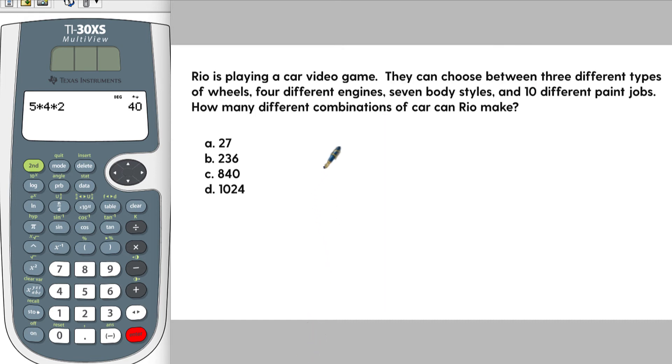Rio is playing a car video game. They can choose between three different types of wheels, four different engines, seven body types, and ten different paint jobs. How many different combinations of car can Rio make?